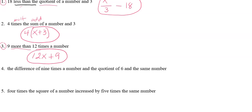Number four: 'the difference of' means subtraction. 'Nine times a number' — times is multiplication. 'The quotient of' means division — six and the same number. So I'm subtracting these two things. On the left of the minus sign, nine times a number; on the right, the quotient of six and the same number as a fraction. That's my answer for number four.